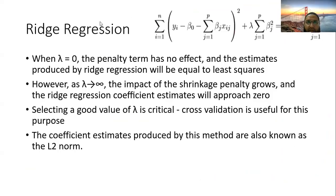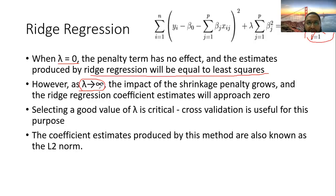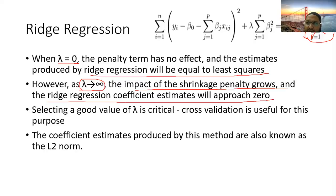When lambda equals zero, ridge regression is equal to least squares because the penalty term becomes zero. As we increase the value of lambda towards large values, the impact of the penalty grows and shrinks the coefficient estimates towards zero. Increasing lambda automatically shrinks or regularizes the values of the coefficients towards zero. We do not know the value of lambda in advance — unlike in a multilayer perceptron where we can easily control the learning rate, we do not have high control over how lambda impacts the total loss function.